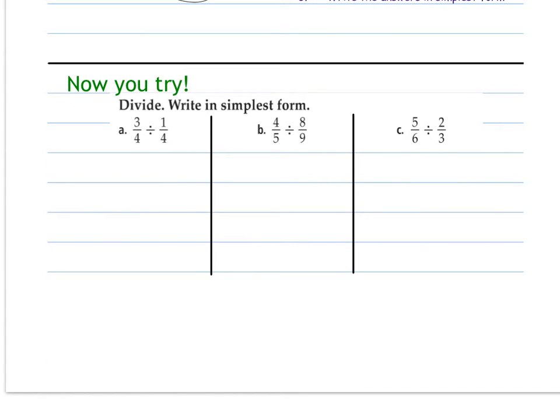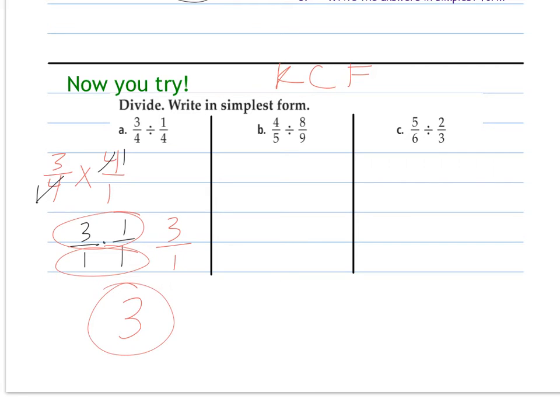Now you try. So a lot of people also say keep, change, flip. Keeping that first number. Changing the sign. And flipping the second number. That's also a way you could think of it. Cross cancel when you can. So I really have three over one times one over one, which is three over one, which is the same as three. So one fourth of three fourths is three.